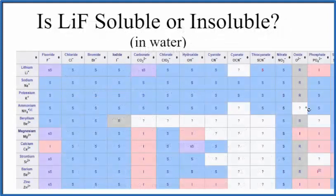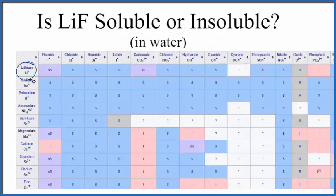So here's part of a larger solubility table. We're going to find lithium, that's Li, Li+ is the lithium ion. And then for fluorine, that's the fluoride ion F-.